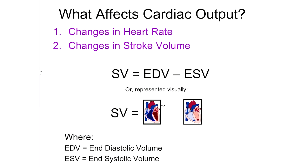We've got a formula for calculating stroke volume. Stroke volume is equal to what's known as the EDV — the end diastolic volume. That's the volume of blood in the left ventricle at the end of diastole, or at the end of the relaxation of the heart. It's during relaxation that the heart is filling with blood, so the EDV is going to be the volume of blood in the left ventricle at the end of filling — the highest volume of blood.